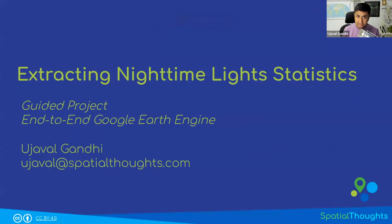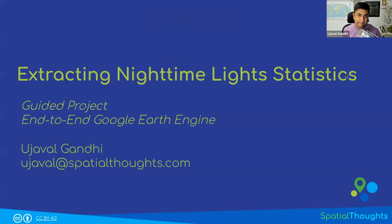Let's get started with a brief overview of the project, the dataset, and methodology we're going to use. The link to the presentation is available in the video description. The goal of the project is to work with a time series of nighttime light images and extract statistics over various admin regions. The most commonly used statistic is called sum of lights — you take the intensity values of nighttime lights images, sum them up over a region, and that represents the total light from the region for that particular time period. This is a useful statistic that correlates directly with the economic output and urbanization of the region.